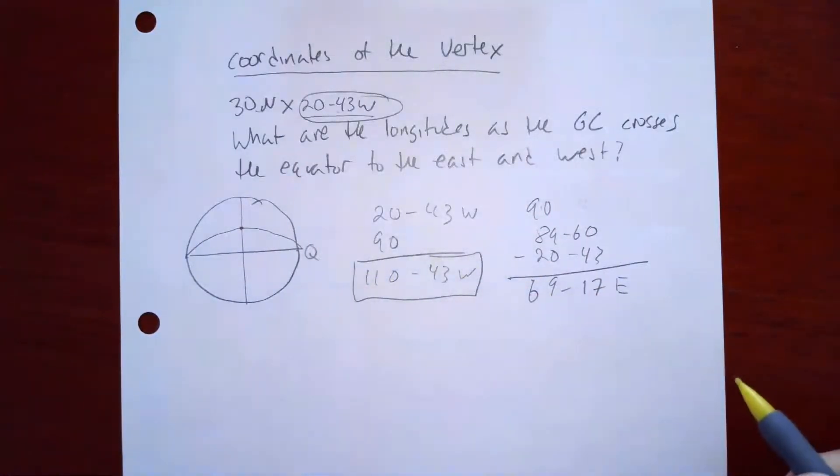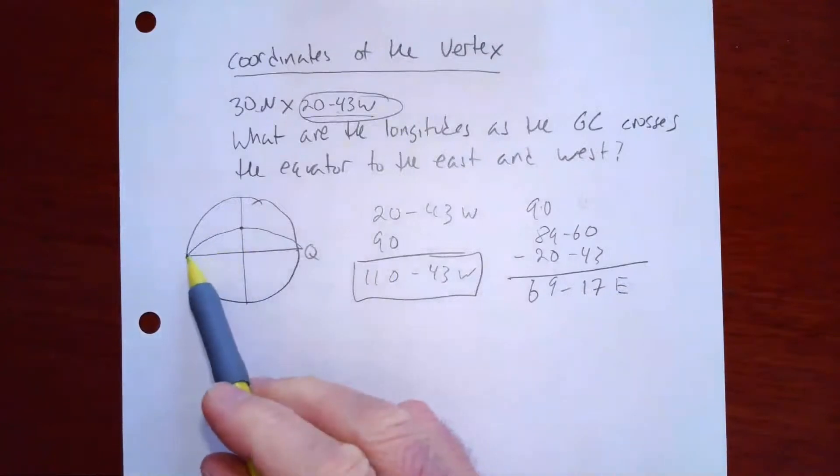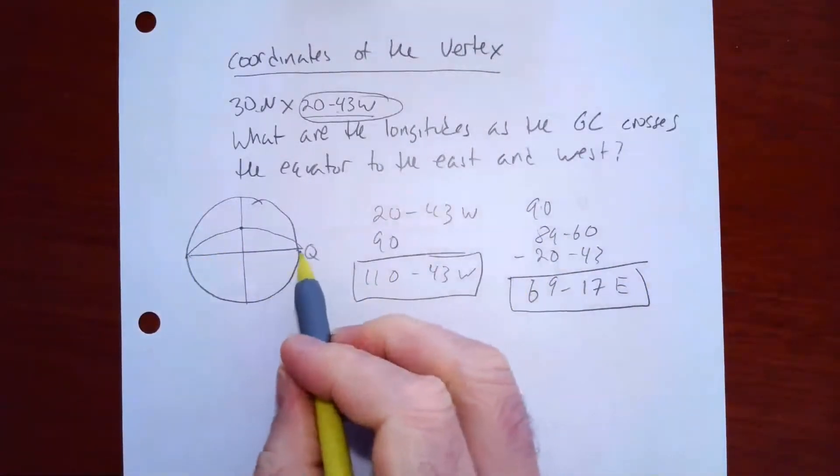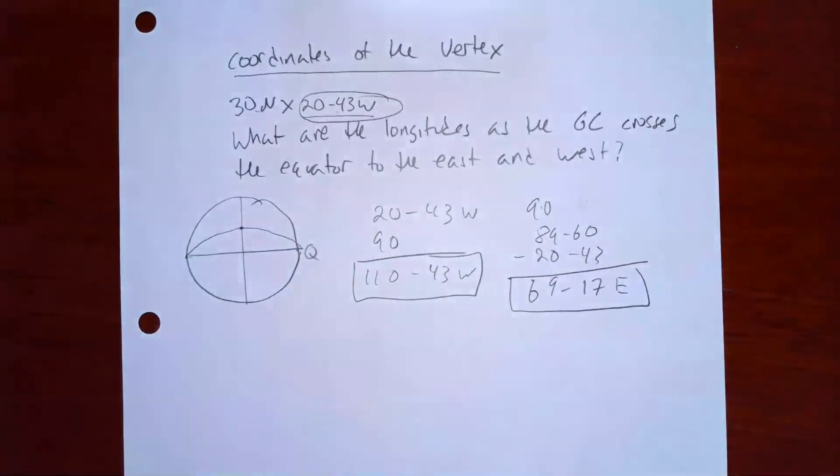So that is the longitude as it crosses the equator to the west, and this is going to be the longitude as it crosses the equator to the east. And that's how you do those problems.